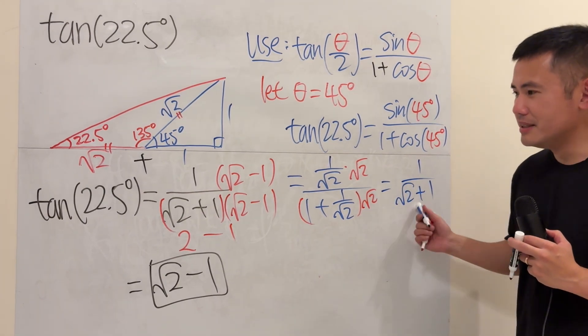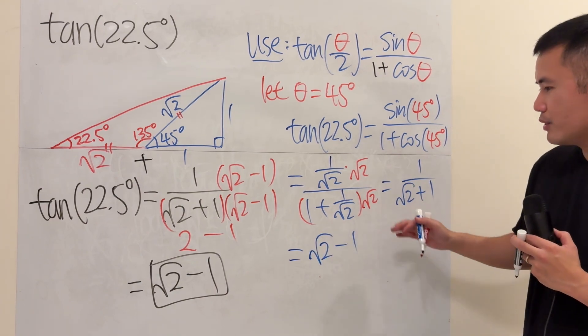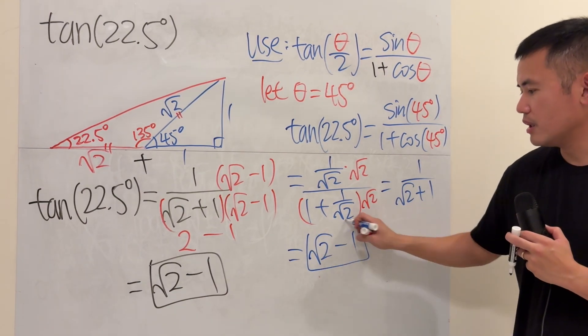And guess what? This is the same as that, which you can end up with square root of 2 minus 1 after you multiply the conjugate, which we did over there already.